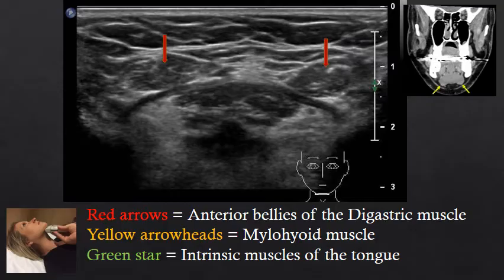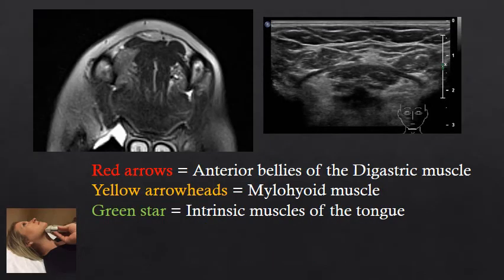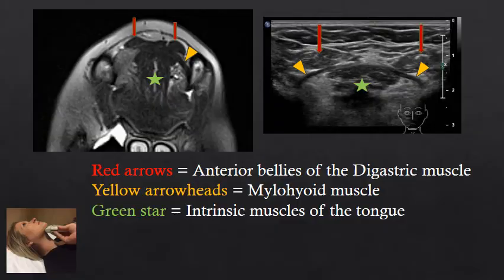Again, we can see the anterior bellies of the digastrics, the thin hypoechoic myelohyoid muscle, and the intrinsic muscles of the tongue. When we correlate this to an MRI of the neck, we see very similar configuration of the muscles. The MRI shows hypointense digastric muscles with a thin myelohyoid muscle, and the intrinsic muscles within the tongue.